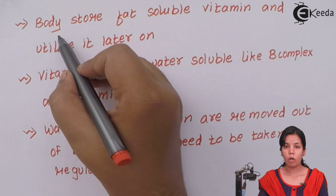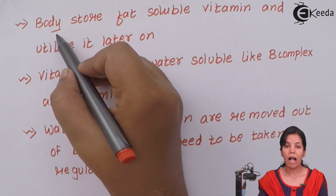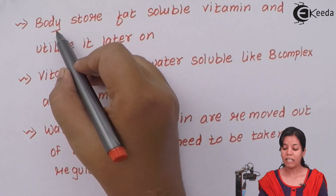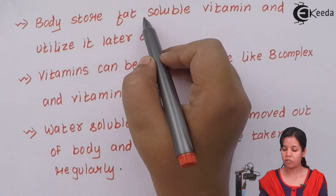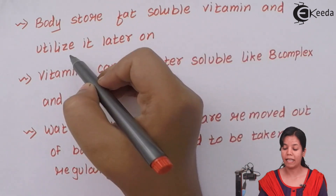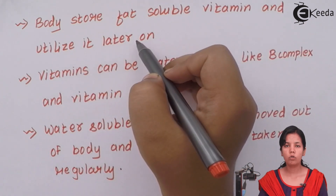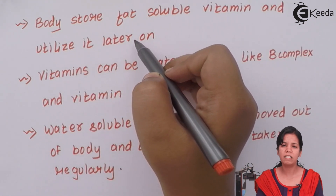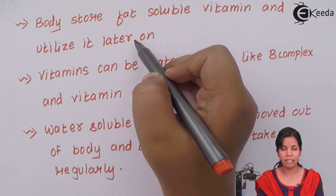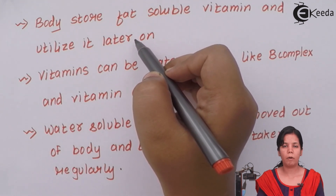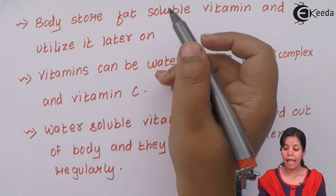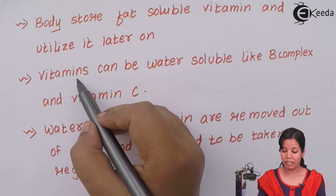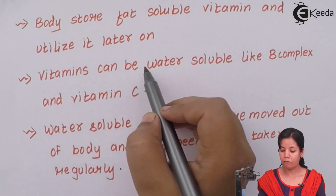Fat-soluble vitamins are stored by the body and utilized later. It is not necessary to take all fat-soluble vitamins regularly. For example, vitamin E can be taken at certain intervals rather than every day.